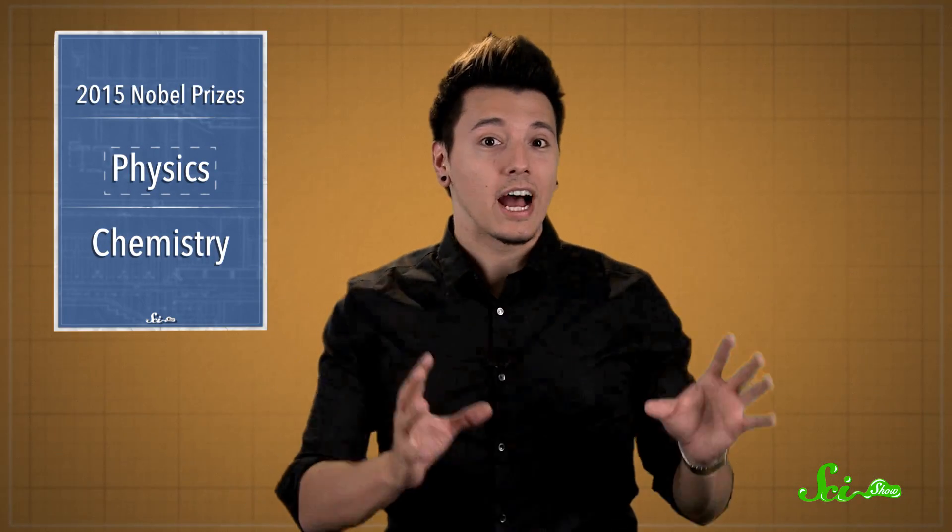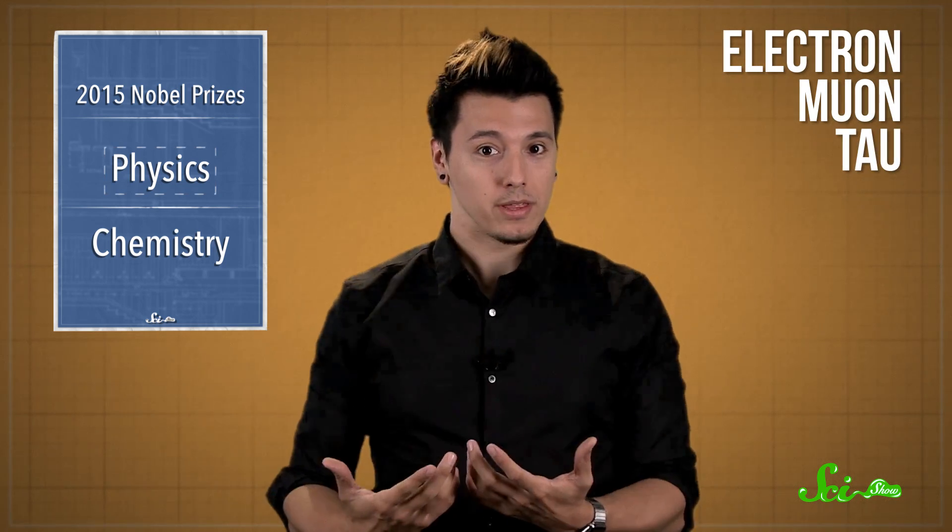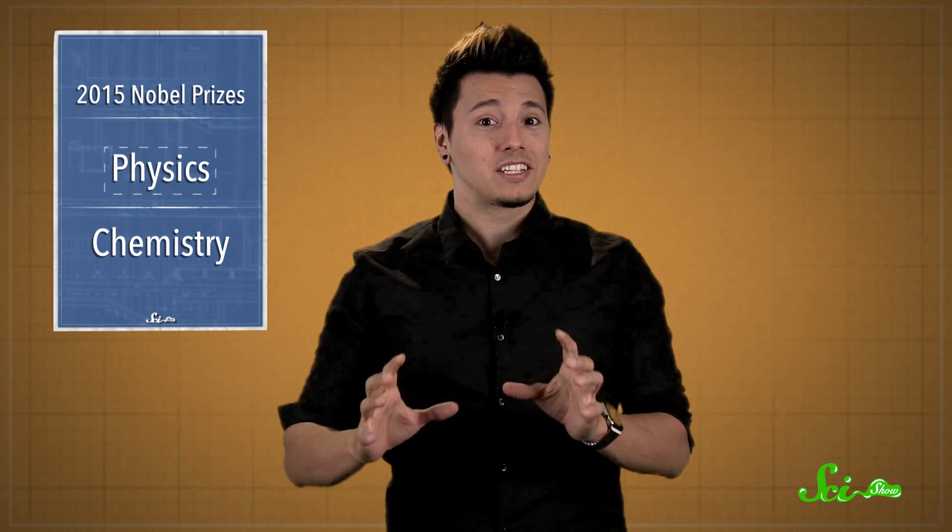We know there are at least three flavors, or types, of neutrinos – electron, muon, and tau – all named after which charged particles they can interact with. But they're very difficult to detect, and thus incredibly hard to study. But if neutrinos are so hard to detect, how did Kajita and McDonald make their discoveries?